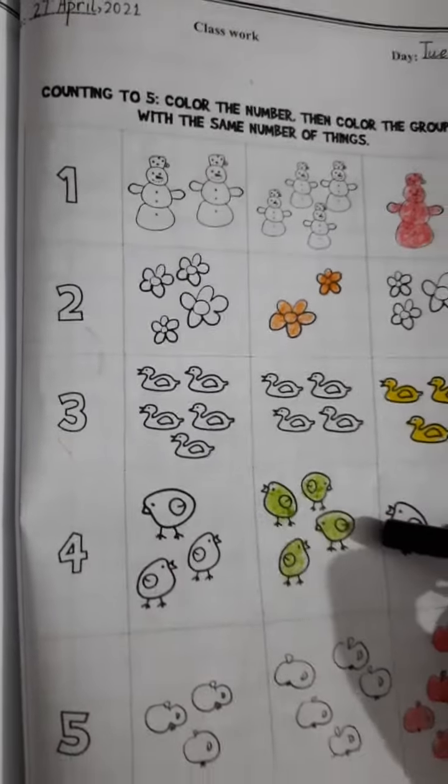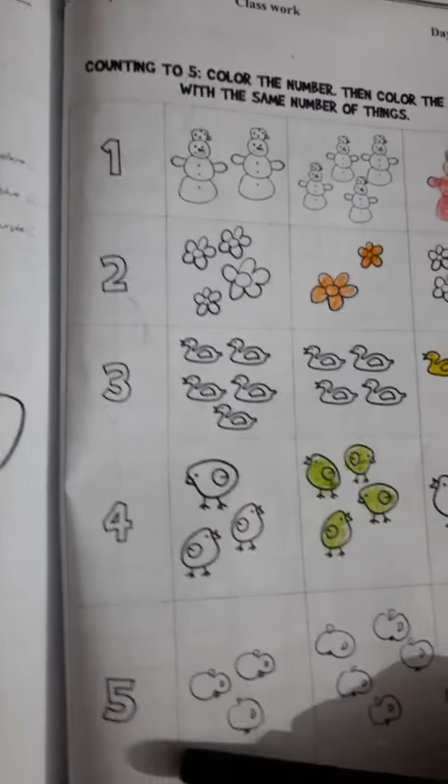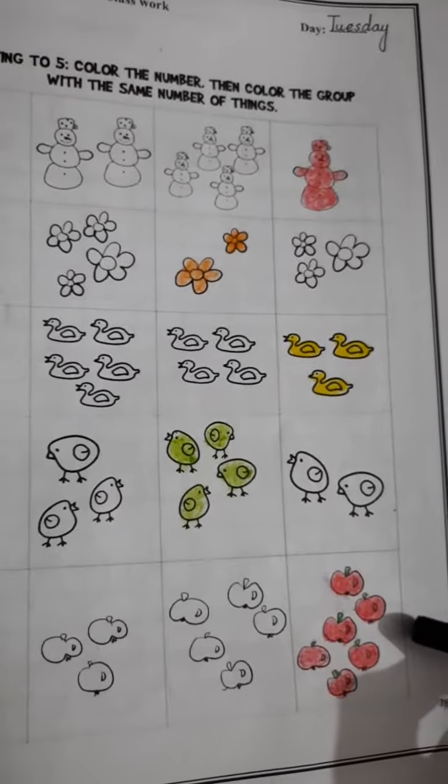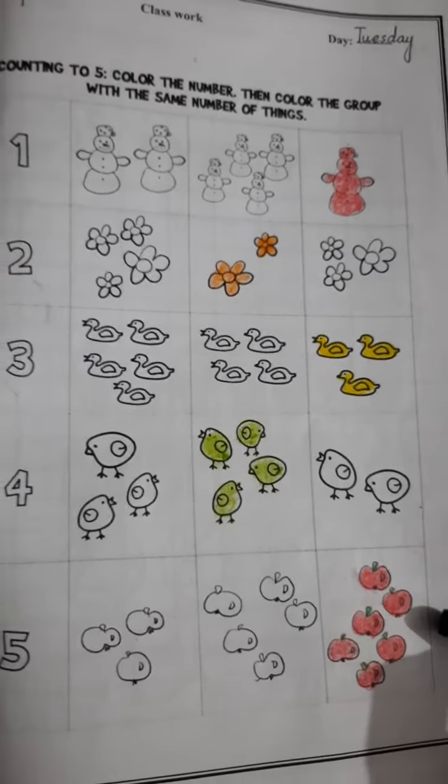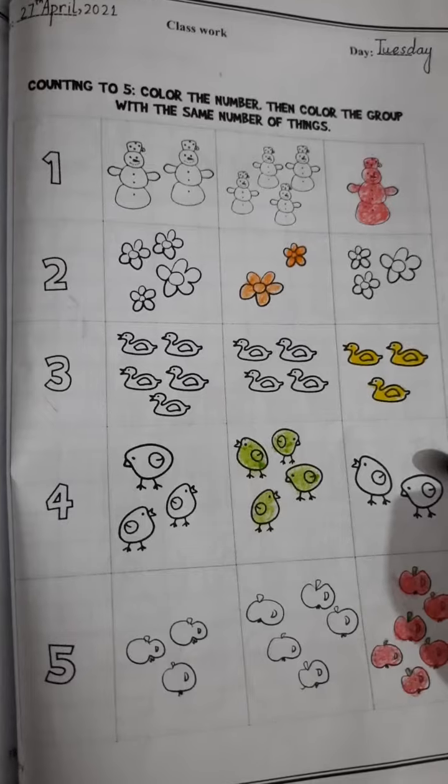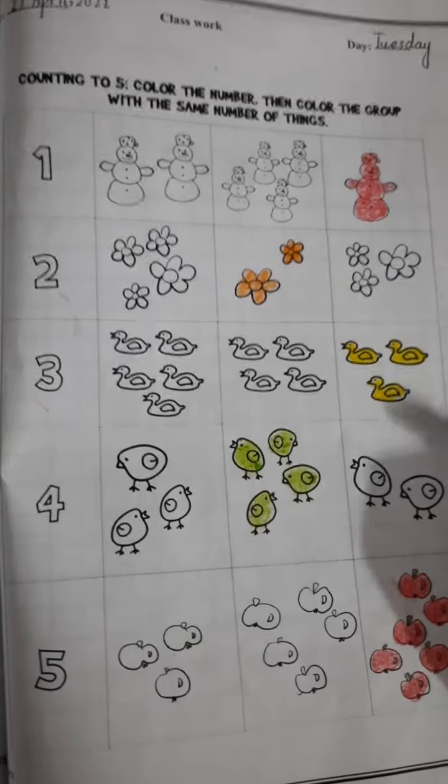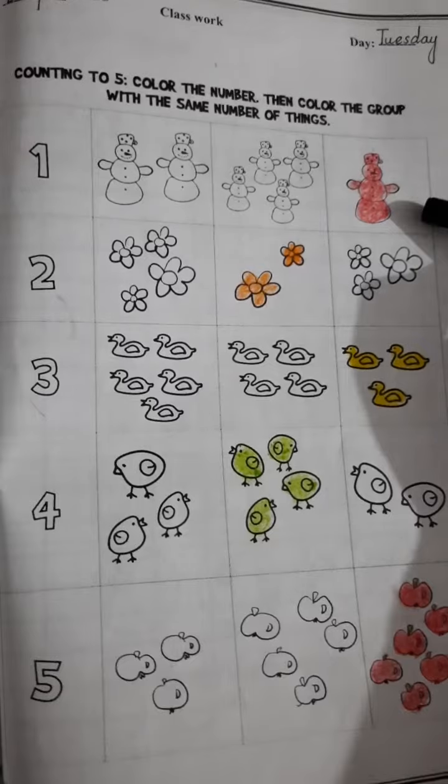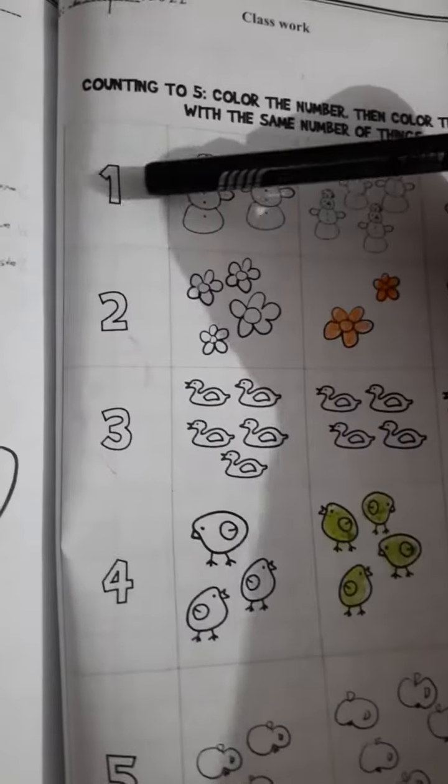And then five, these are five apples, color the apples. You have to first color in the numbers, then you have to count the objects with the number. For example, this is one, so you will color only one snowman, you will not color the remaining ones.